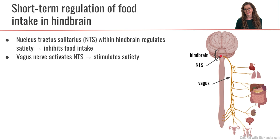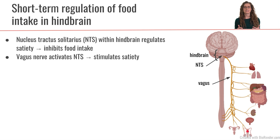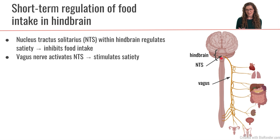One of the ways that the NTS is stimulated is by the vagus nerve. The vagus nerve is a very large nerve that leaves the brain and innervates many different organs throughout the body. The vagus nerve has traffic leaving the brain going out to the organs, and it also carries lots of afferent traffic — signals coming from the periphery and going back up into the brain. The NTS receives afferent signals from the periphery through the vagus nerve to stimulate the NTS.